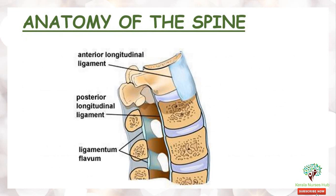Let's see the anatomy of the spine. Before understanding the mechanism of spinal cord injury, we should know about the three important ligaments of the spine. They are the anterior longitudinal ligament, the posterior longitudinal ligament, and the ligamentum flavum.